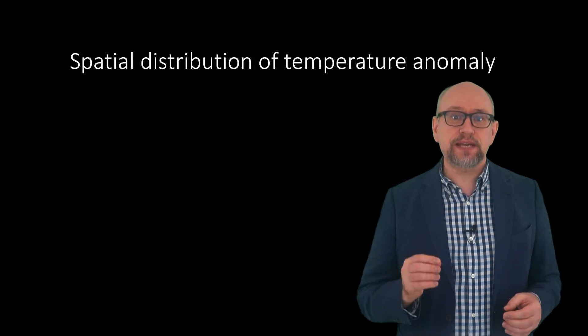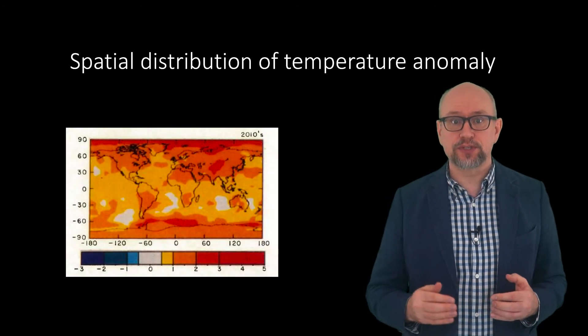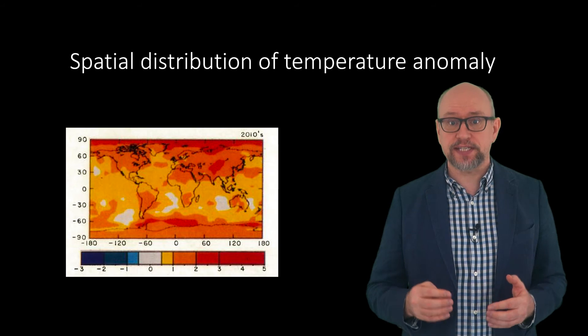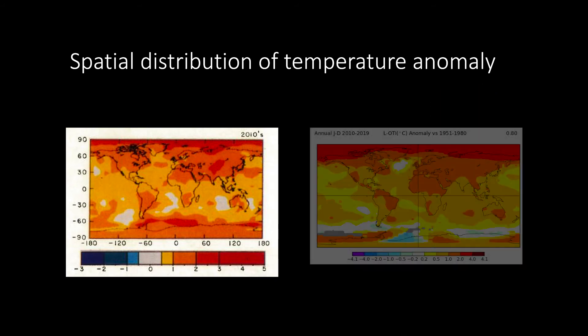Hansen's study also produced a map of the projected spatial distribution of the global surface temperature change in Scenario B for the 2010s. We can compare this map with observed global temperature maps to evaluate the accuracy of Hansen's spatial distribution. This map from NASA's Goddard Institute for Space Studies shows the global surface temperature anomaly in the period 2010 to 2019 with respect to the 1951 to 1980 baseline. Although the actual amount of warming has been less than projected in Scenario B, this is due to Hansen's climate model projecting a higher rate of warming due to the high climate sensitivity.